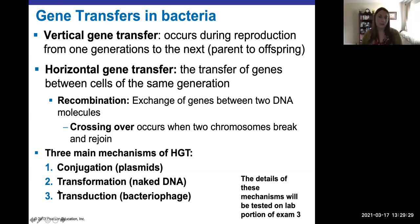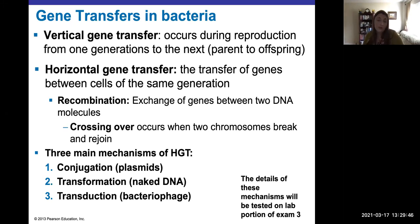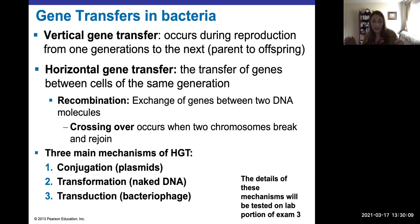Recombination means a new sequence of DNA that neither of the two original molecules had before. The most common way this occurs is through crossing over, where two chromosomes have a break, overlap with each other, and swap places essentially. Let's first start with transformation.